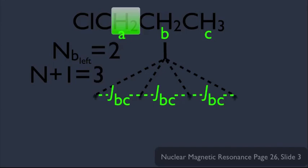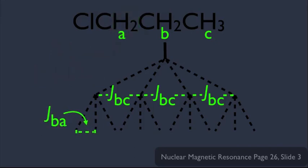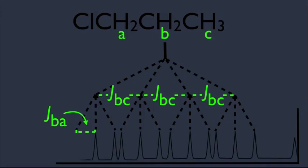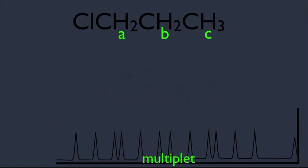Since we've completed our diagram, notice each endpoint has been split into three. There are very many peaks. In fact, it's so many peaks bunched together that we don't call it a triplet or quartet — we simply call this signal a multiplet. This diagram shows us why the B hydrogen signal would be split into a multiplet.